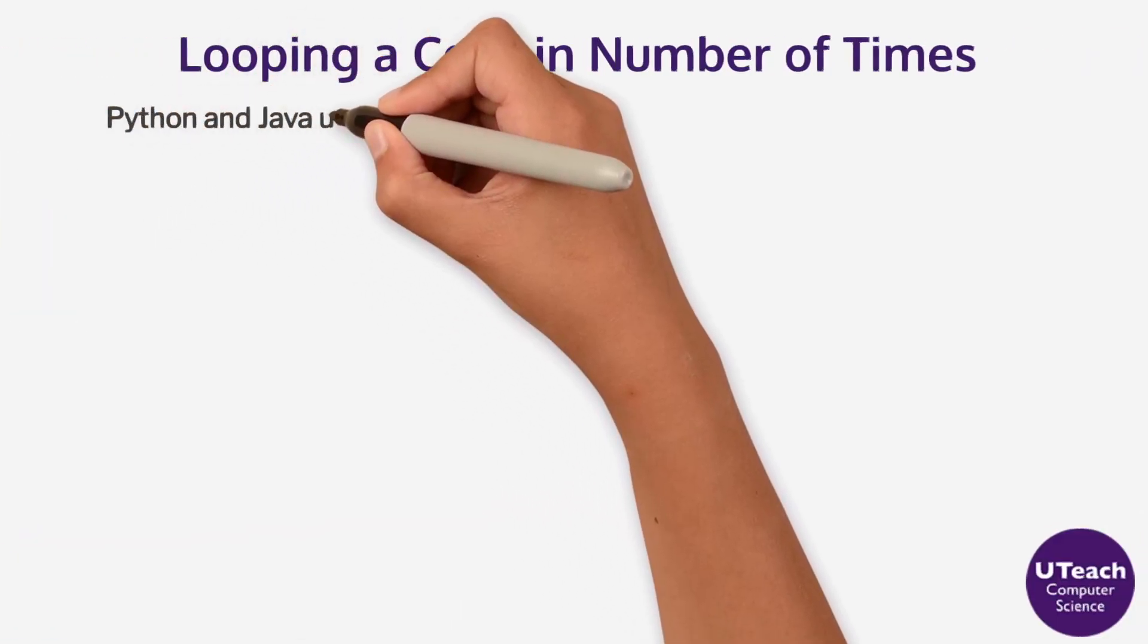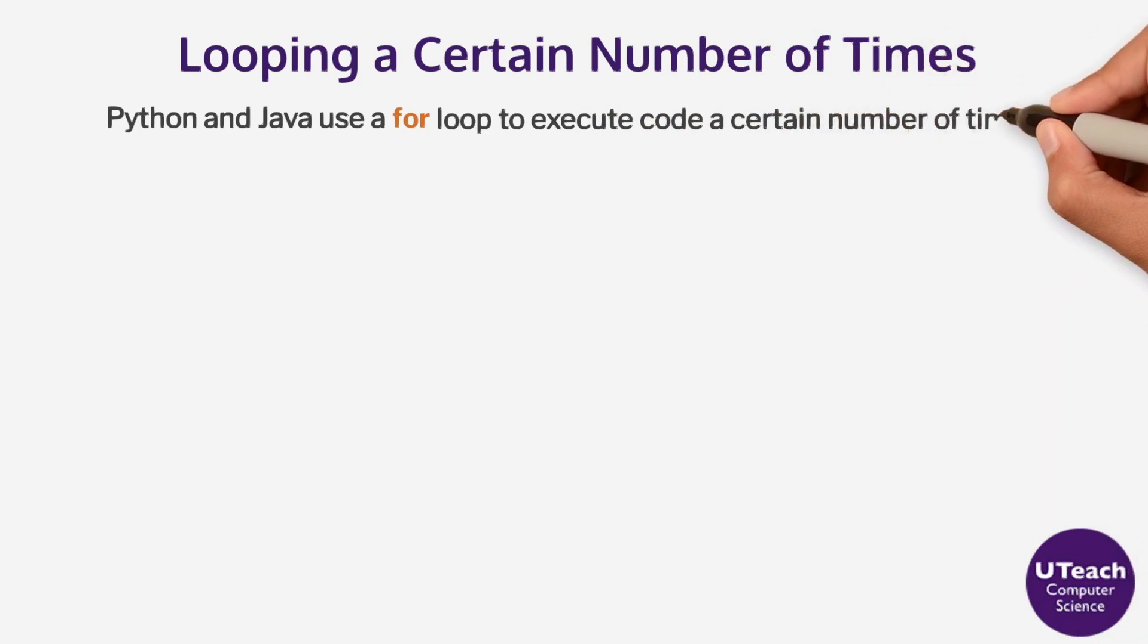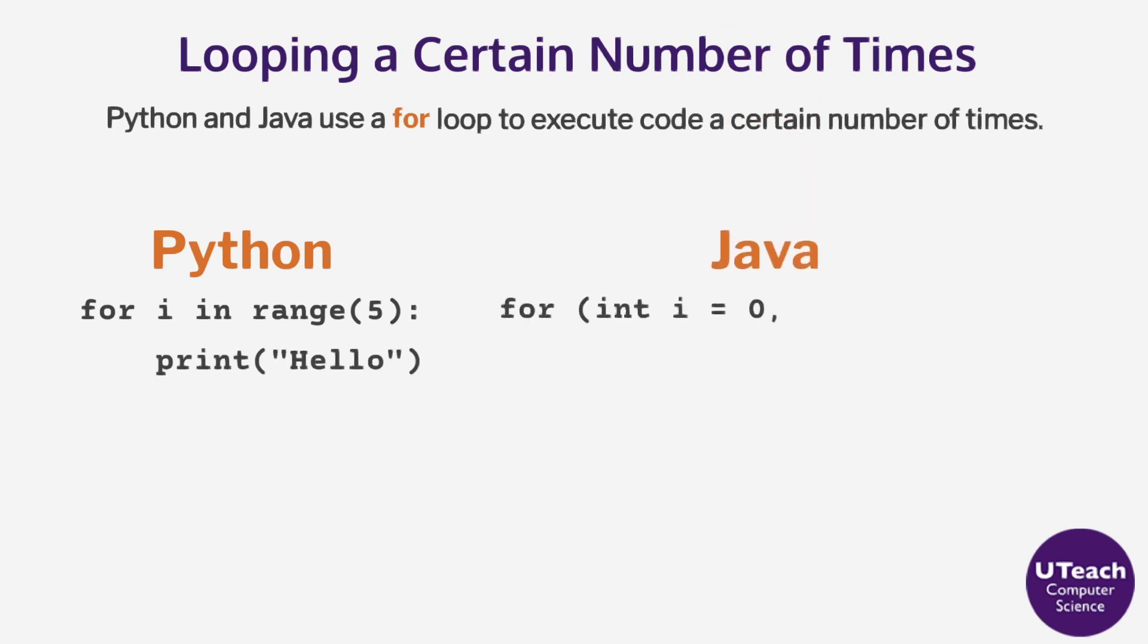Python and Java use a for loop to execute code a certain number of times. Here is an example in Python, and one in Java.